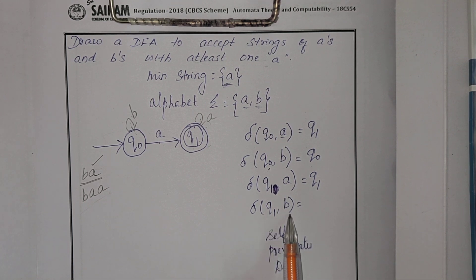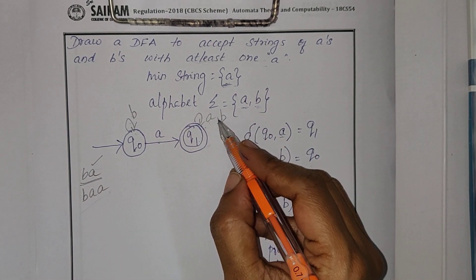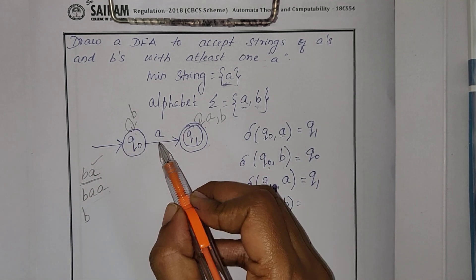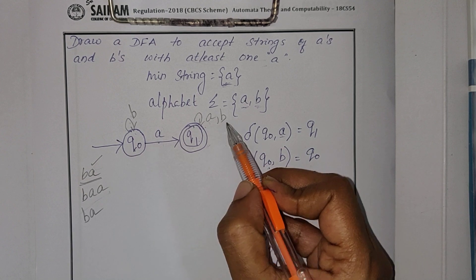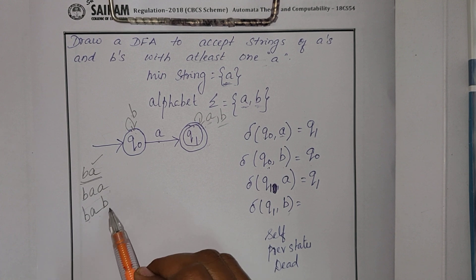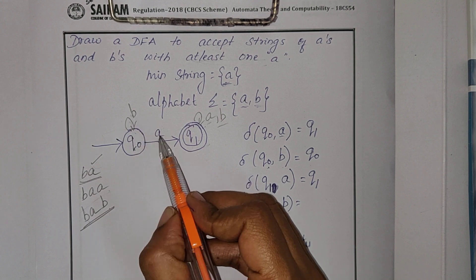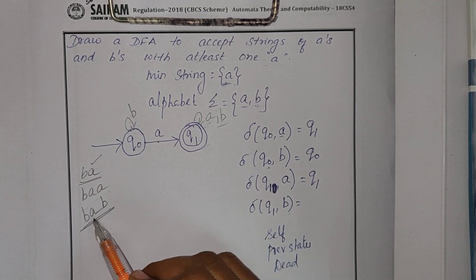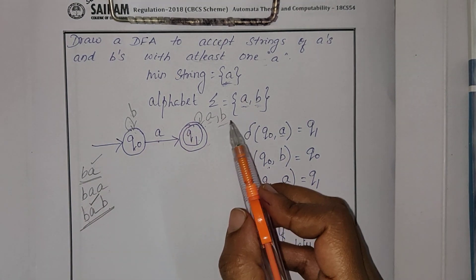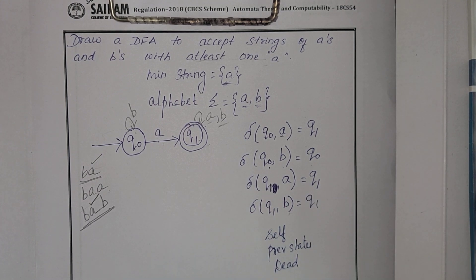Next I find Q1 comma B. I check with self first, writing the string B, A, B. The condition is I should have at least one A — I have an A. So this marking is correct, and Q1 comma B goes to Q1. My transition diagram is now complete.